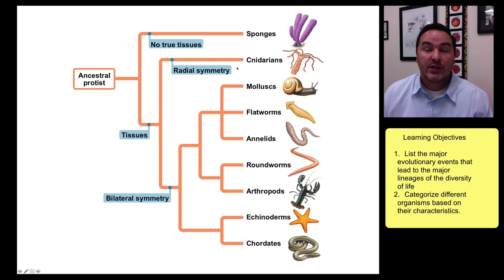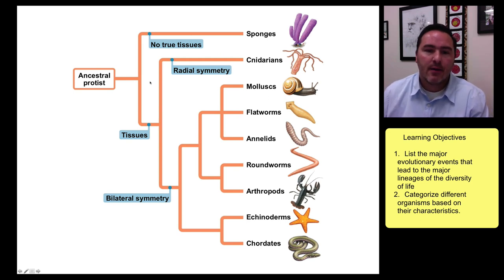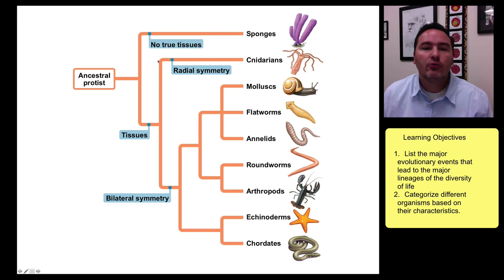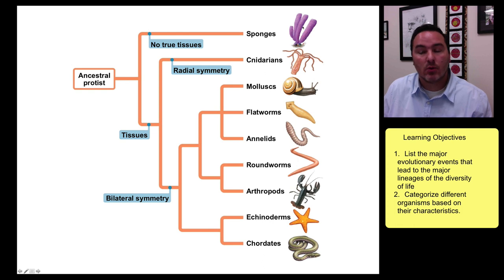Let's look at the evolution of the animals. The first animals that evolved, coming from some ancestral protist, had no true tissues. They looked something like what we, in modern day, call sponges.